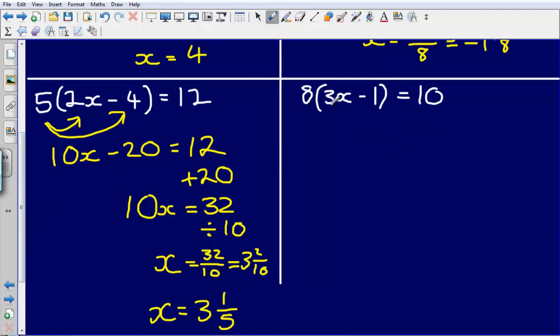Next one I've got 8 bracket 3x minus 1. So again multiply out the brackets. 8 multiplied by 3x gives me 24x. 8 multiplied by minus 1 is going to give me minus 8. That's all equal to 10.